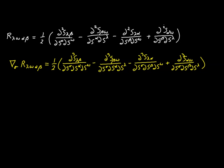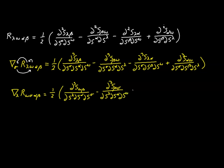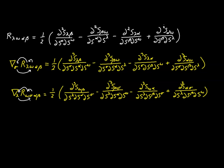Now we permute the indexes similarly to before. First: rename sigma to lambda, lambda to omega, and omega to sigma. Then again: rename lambda to omega, omega to sigma, and sigma to lambda.